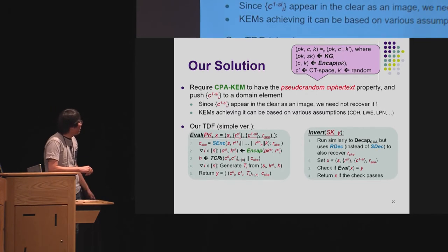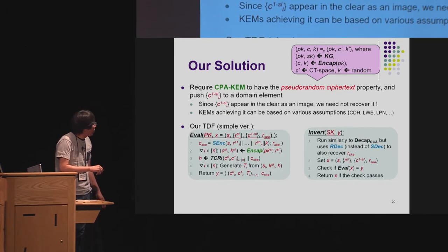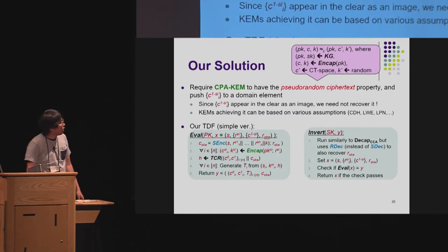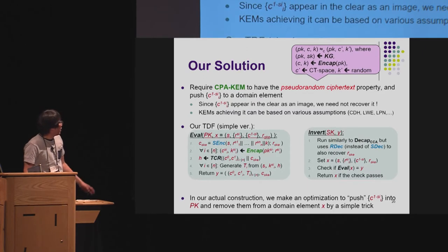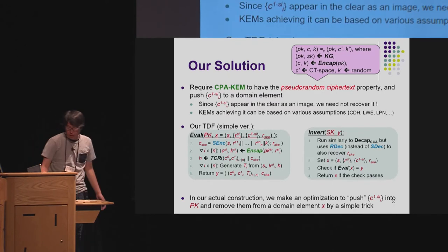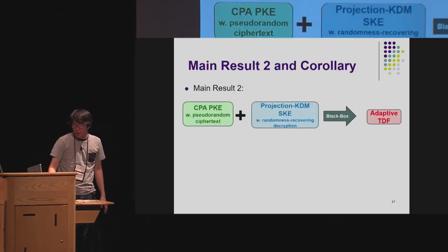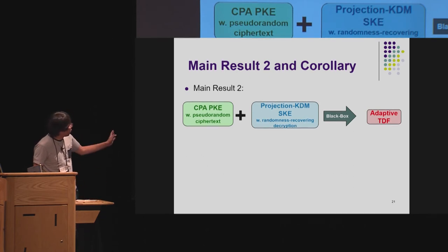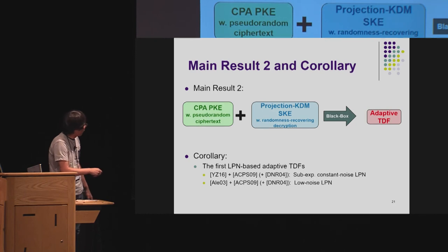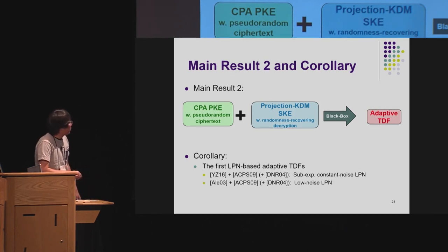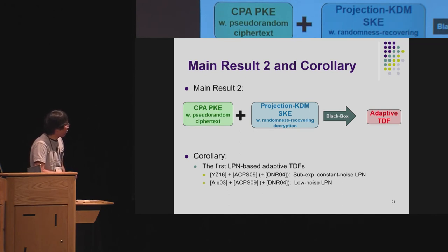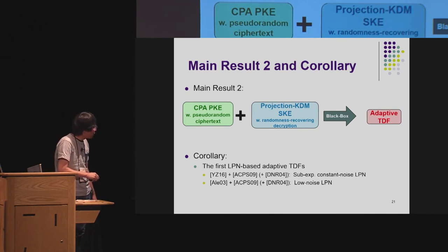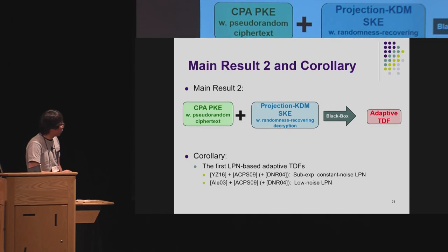This is a simplified version; we also perform some optimization for a slightly more efficient version — please check the proceedings. This is the summary of our second result, which is also a black-box construction. As a corollary, we obtained the first LPN-based adaptive trapdoor functions: one from the sub-exponential hardness of constant-noise LPN, and the other from the polynomial hardness of low-noise LPN.